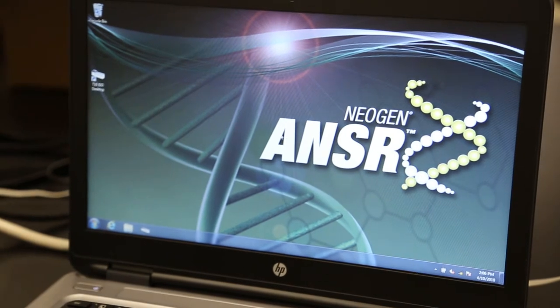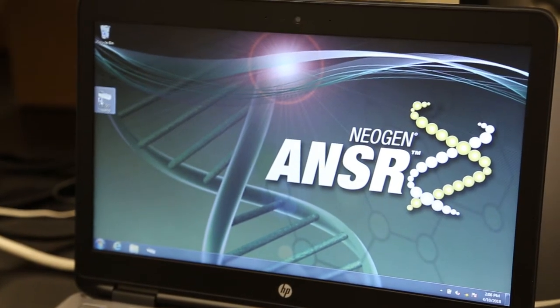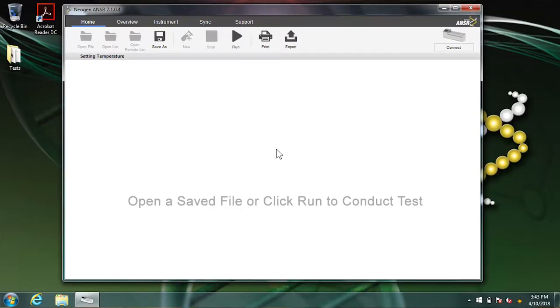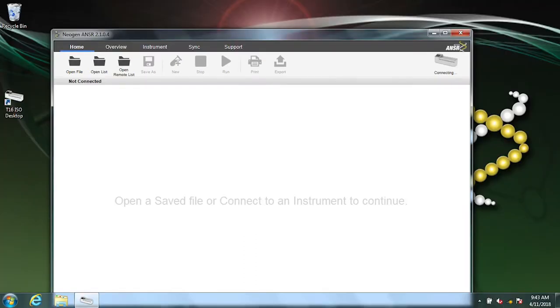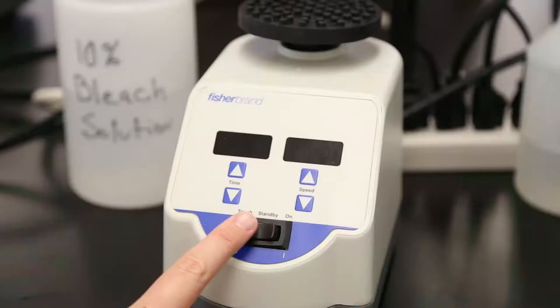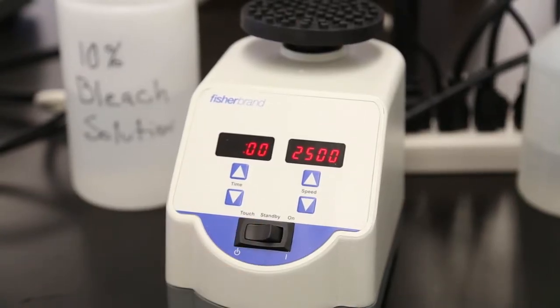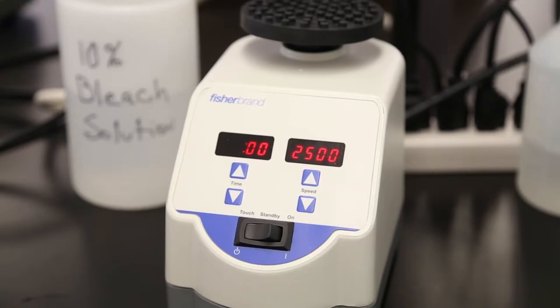Turn on the laptop and double-click the T16 ISO desktop icon. In the upper right corner, click Connect. A dialog box will appear. Click Connect next to one instrument available. It takes a moment for the computer and reader to connect. When they do, a new menu appears, as well as a green light in the upper right corner of the screen. Now, make sure that the vortex is plugged in and turned on.